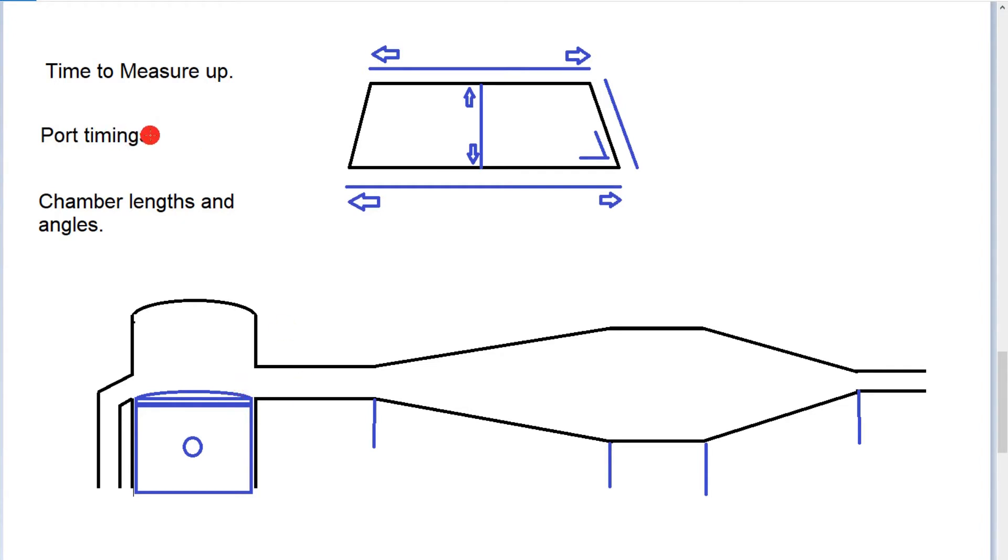And to do that we need to cover two things: port timings, chamber lengths and angles. Now the port timings can be measured using your number of formula to extrapolate the port timings from the distances of the port to the top of the cylinder.